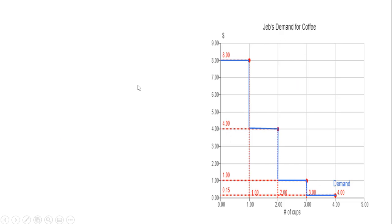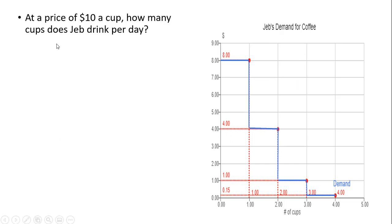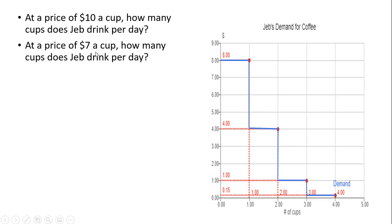Given Jeb's demand curve, let's ask a number of questions about his quantity demanded at a given price. At a price of $10 a cup, $10 is off Jeb's demand curve — at that price, Jeb will not buy any coffee, since at most he's willing to pay $8 for the first cup. At a price of $7, we find $7, go across horizontally, and we bump into the demand curve — Jeb will consume one cup of coffee.